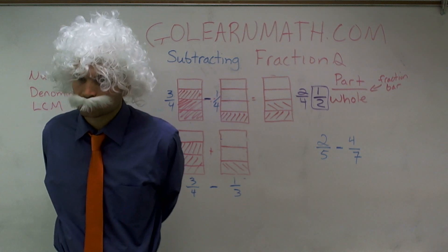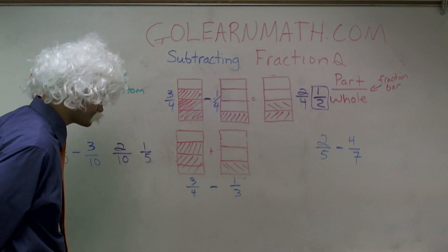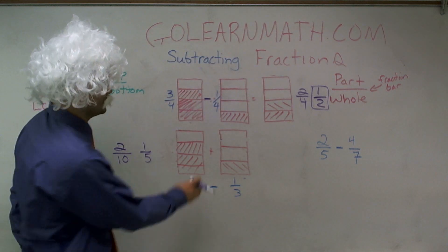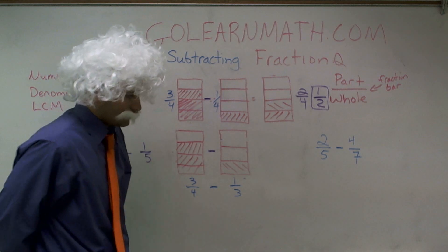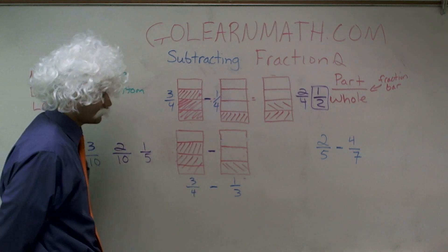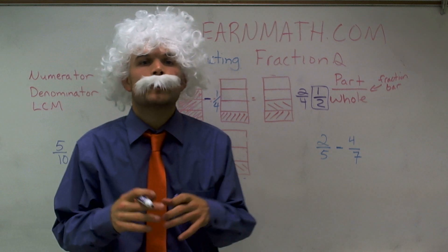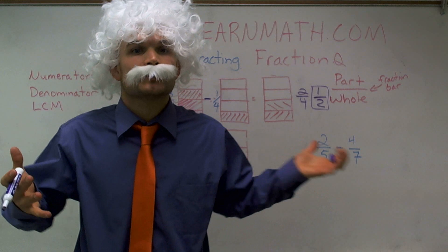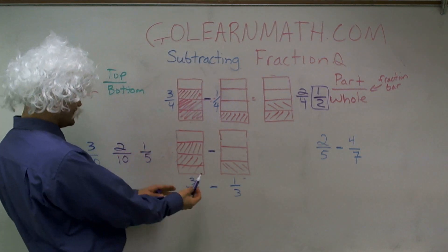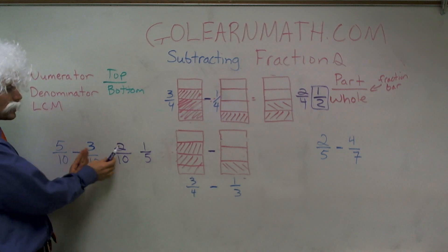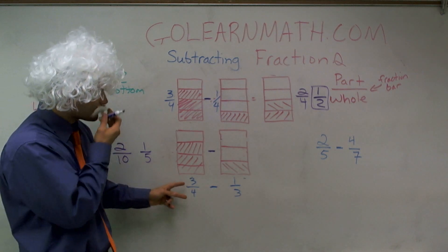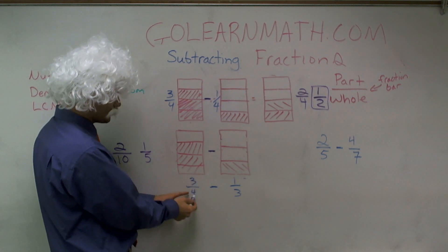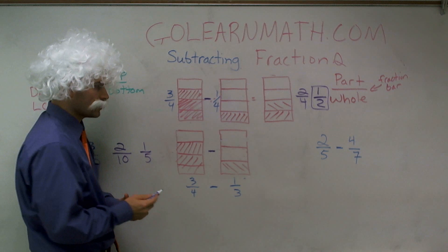Now, let's say we have a problem. Now, let's say that I now have 3 fourths of a candy bar, and I want to subtract 1 third of another candy bar. How much parts of a candy bar am I going to have left? Now, it's easy when you have the denominators that are the same, because you can just subtract the numerators. However, think about it this way, ladies and gentlemen. If I am to subtract 3 fourths of a candy bar and subtract 1 third of a candy bar...